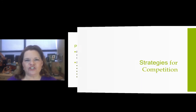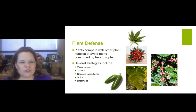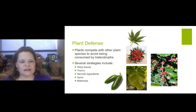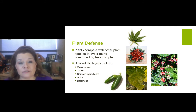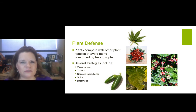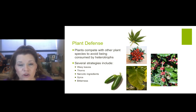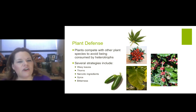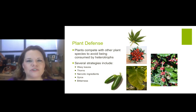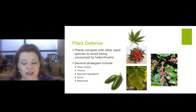Strategies for competition. Plant defenses: plants compete with each other and other plant species to avoid being consumed by heterotrophs. Some ways they might do that — waxy leaves, thorny leaves, narcotic ingredients, spices, bitterness, and stinging options. Think about poison ivy, poison oak, and there's a plant called creosote. Here are some peppers — this would deter you from eating something if you were an animal. If I were to give my neighbor's donkey one of those peppers, she wouldn't like it and would spit it out. But she'd eat carrots all day long. Plants have defensive mechanisms to try to help them survive and not be consumed.